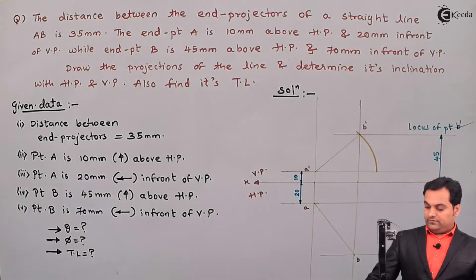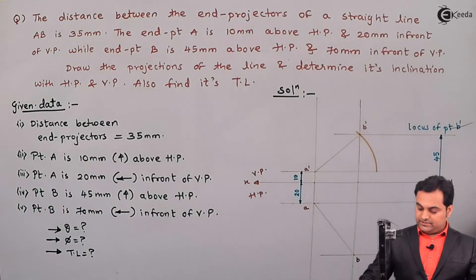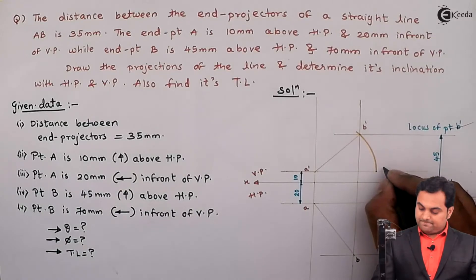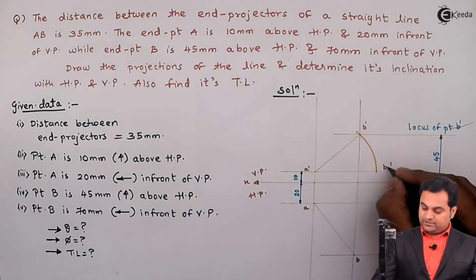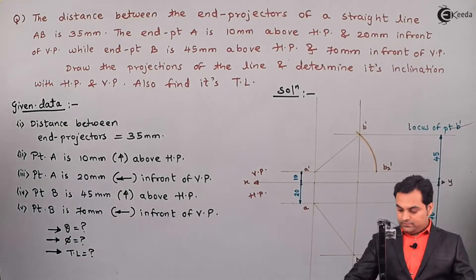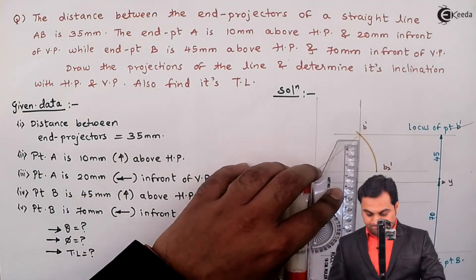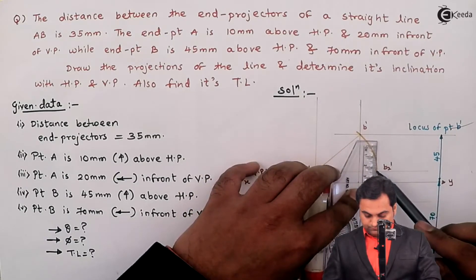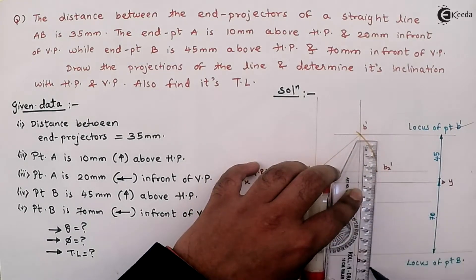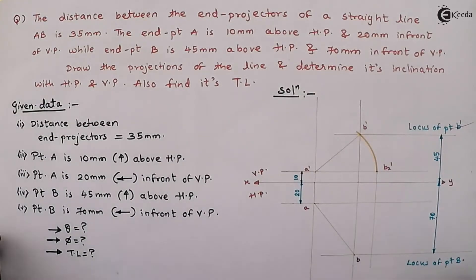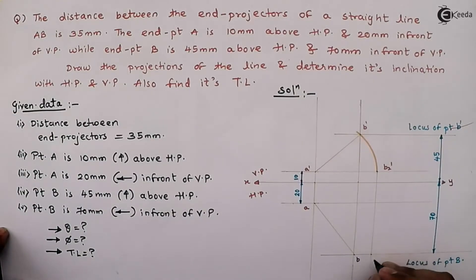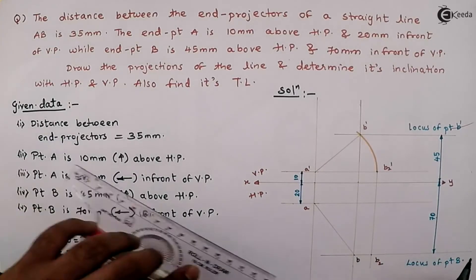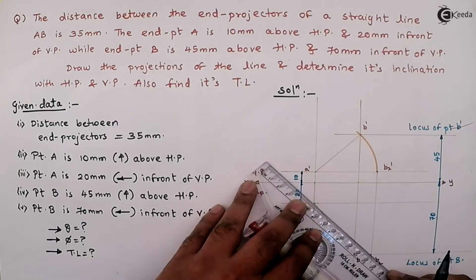I will give this point notation as B', projecting B' down that is in HP. Where it intersects the locus, that gives me the point B2. So joining it with point A will give me the true length.